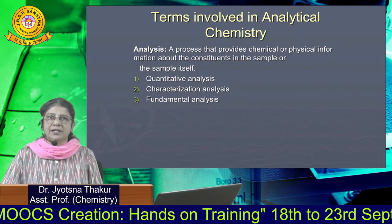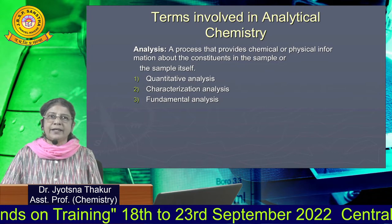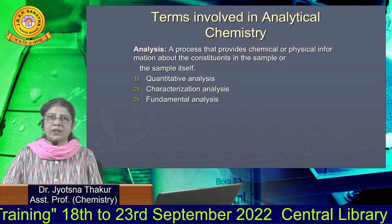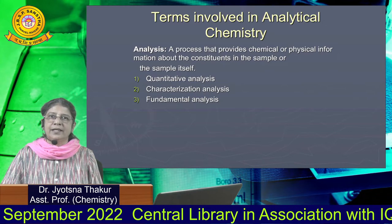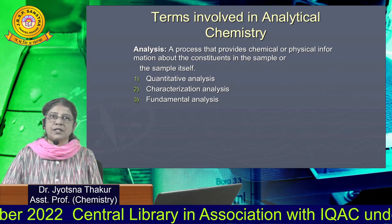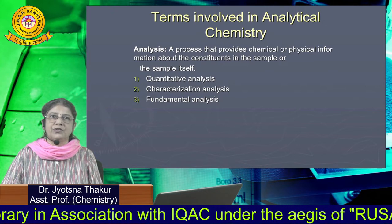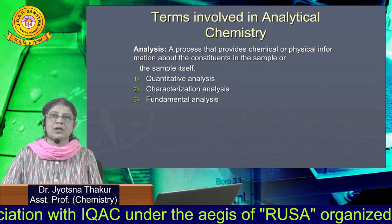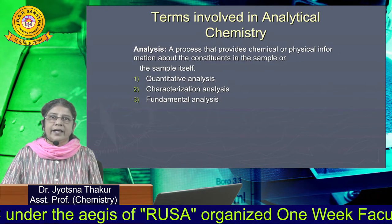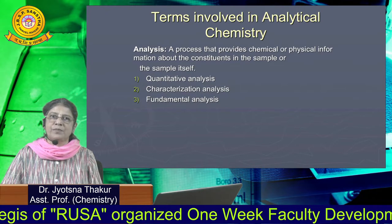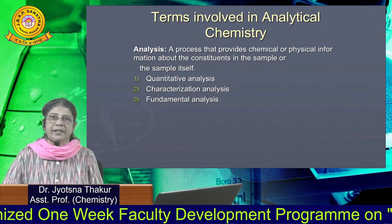Now we will discuss the terms involved in Analytical Chemistry. Analytical Chemistry basically deals with analysis. Analysis is a process that provides chemical or physical information about the constituents in the sample or the sample itself. There are three types of analysis: quantitative analysis, characterization analysis, and fundamental analysis.